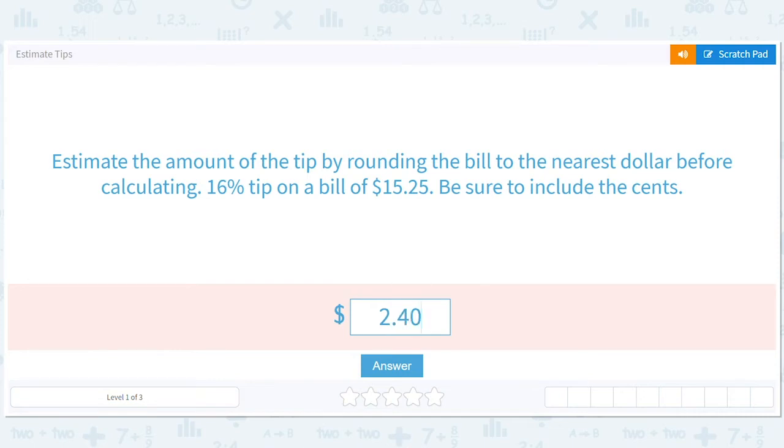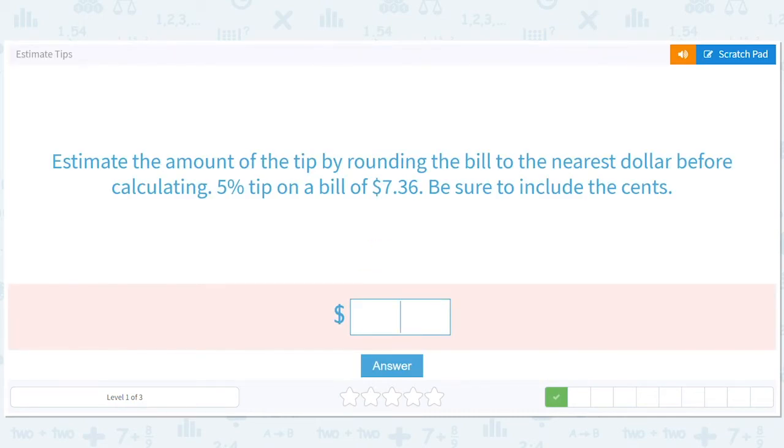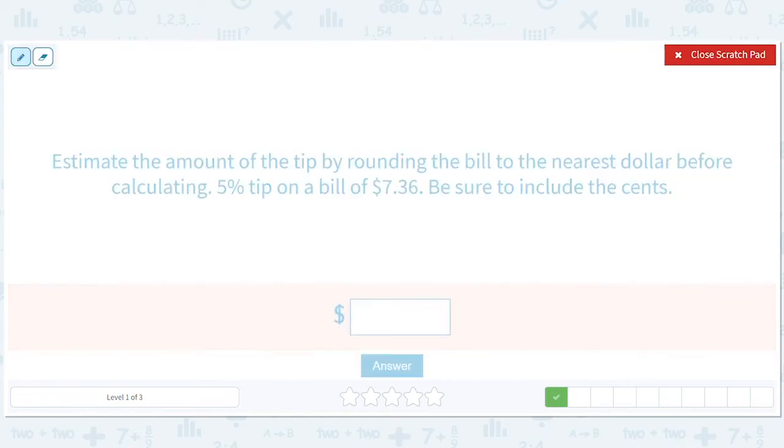Well, let's make sure. Estimate the amount of the tip, right? They could have asked to estimate the total bill, but they're saying the tip. Estimate the amount of the tip by rounding the bill to the nearest dollar before calculating. Okay, so we're going to take the $7. We're going to round it to 7. And then we're going to do a 5% tip. Alright, so what are we doing? 7 times 5%, which is 7 times .05.